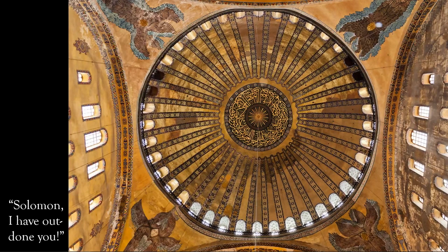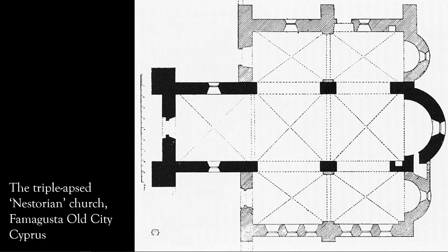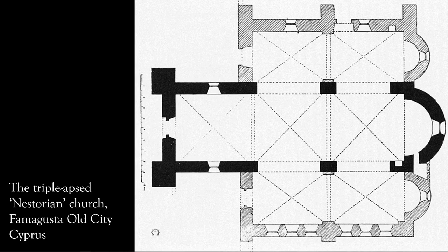Even in Hagia Sophia, the influence of the Roman basilica with its nave and apse could be felt. But later on, the architects abandoned this connection to pagan Greek and Roman architecture and set off to experiment on their own. An example of this is the triple-apse church in Famagusta Old City in Cyprus. Some of these churches abandoned the synthronon and placed two side apses on either side of the original east-end apse, incorporating the symbol of the Trinity into the church.